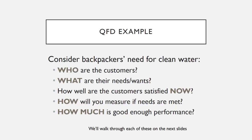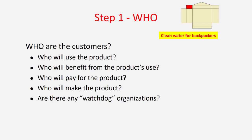Let's begin with a specific example: consider a backpacker's need for clean water. We want to answer the questions — the who, what, what's going on now, how, and how much. For the first step, defining who your customers are, we're going to be filling this in the upper left corner of the house of quality.